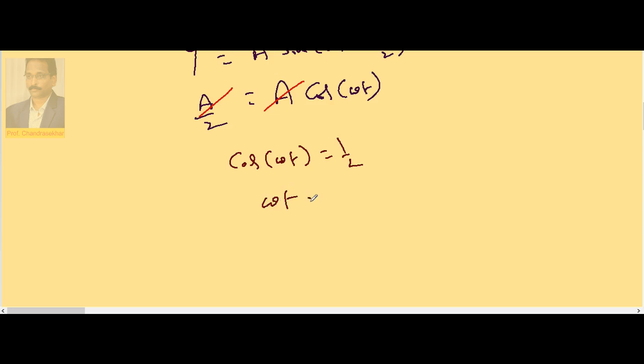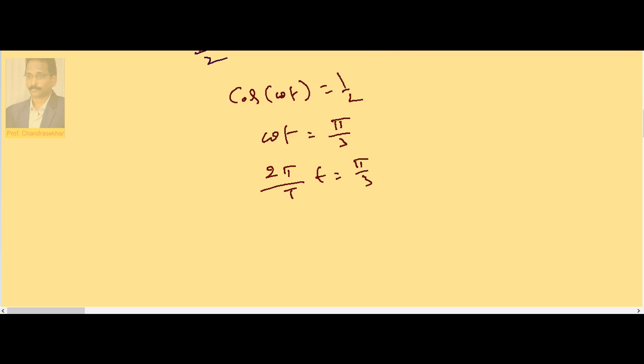That means ωt... cos 60° is half, so π/3. So 2π/T × t = π/3. So cancel π on both sides.